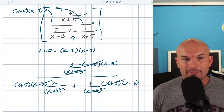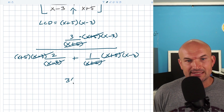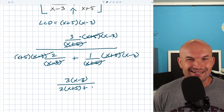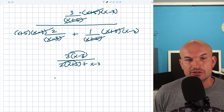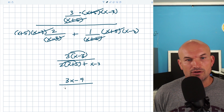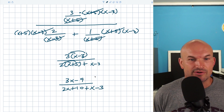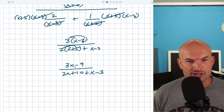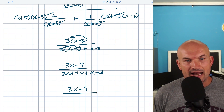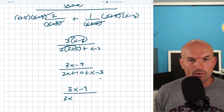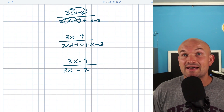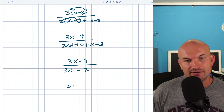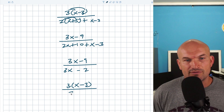Let's clean up what we have left. In the numerator we have 3 times (x−3), and in the denominator we have 2 times (x+5) plus 1 times (x−3), which I'll just write as (x−3). Applying the distributive property gives us 3x−9 over 2x+10+x−3. Combining like terms in the denominator: 2x+x = 3x and 10−3 = +7... so 3x−9 over 3x+7. You can factor out the 3 in the numerator to get 3(x−3) over (3x−2) if required by your directions.